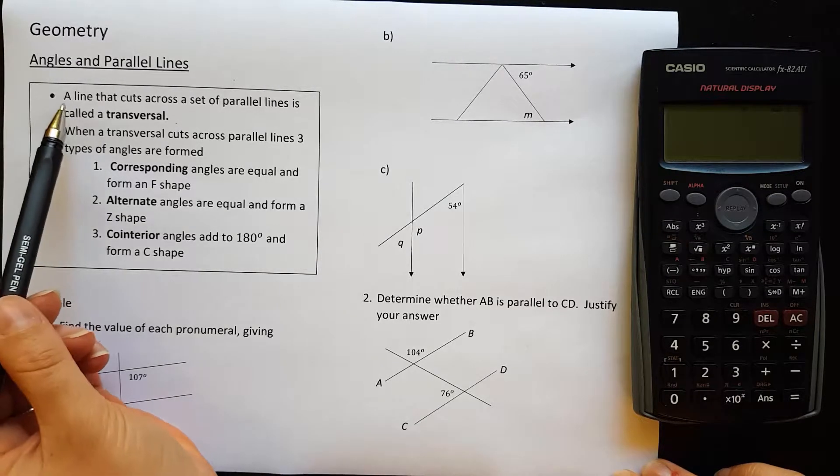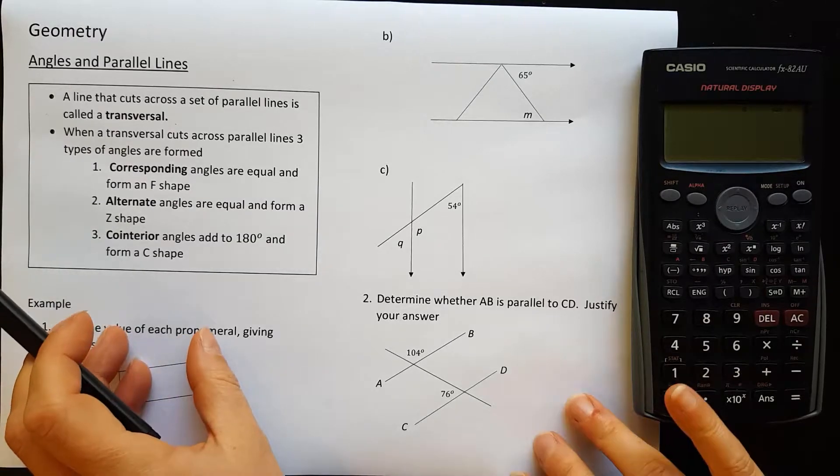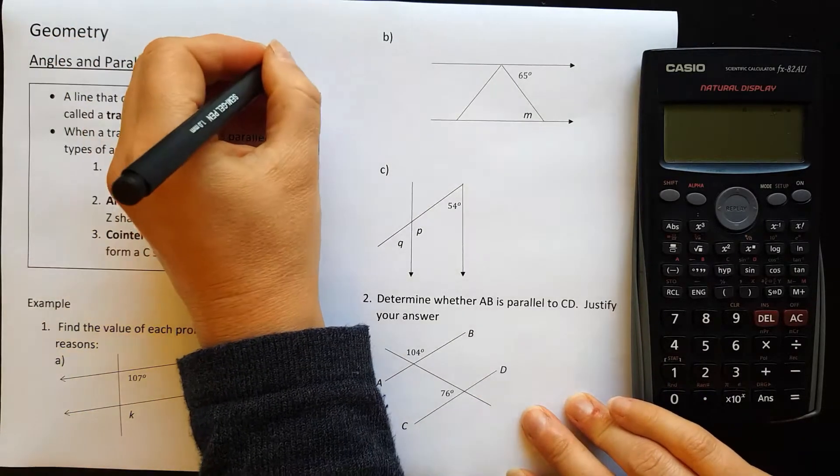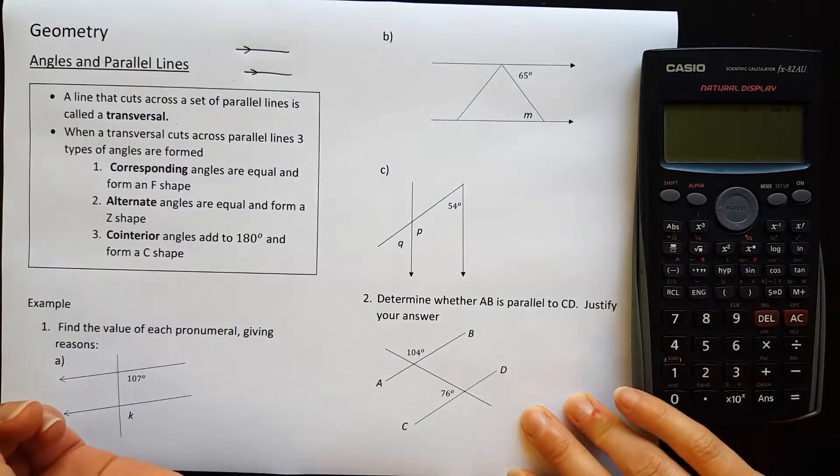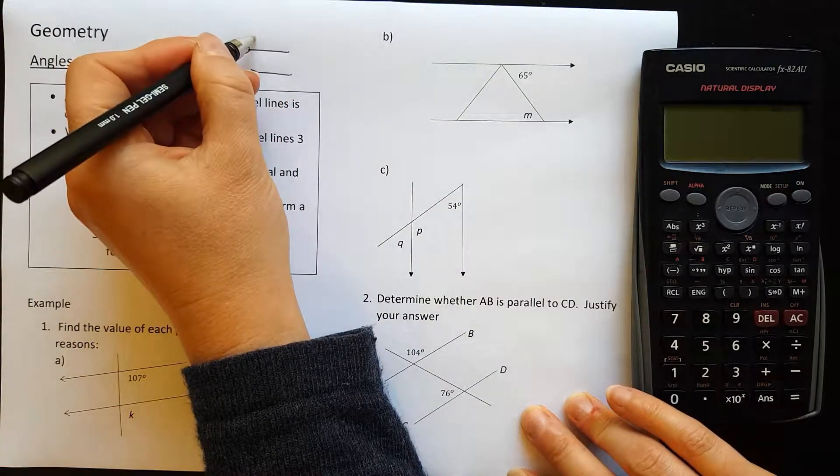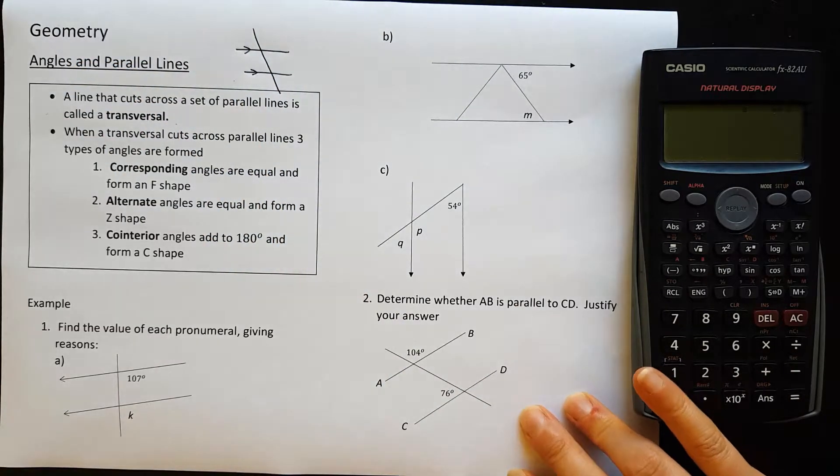A line that cuts across a set of parallel lines is called a transversal. So if we have some parallel lines like this, remember the little arrows mean those lines are parallel. If I draw a third line that crosses over both of them, that line is called a transversal.